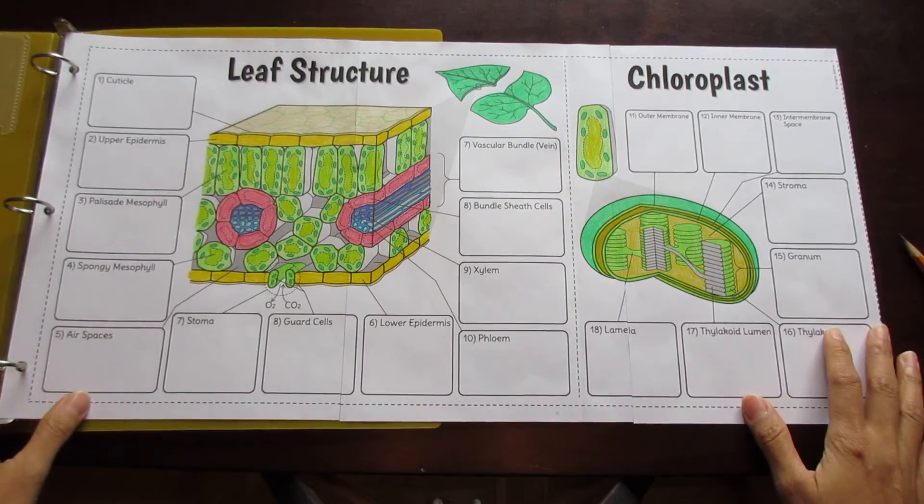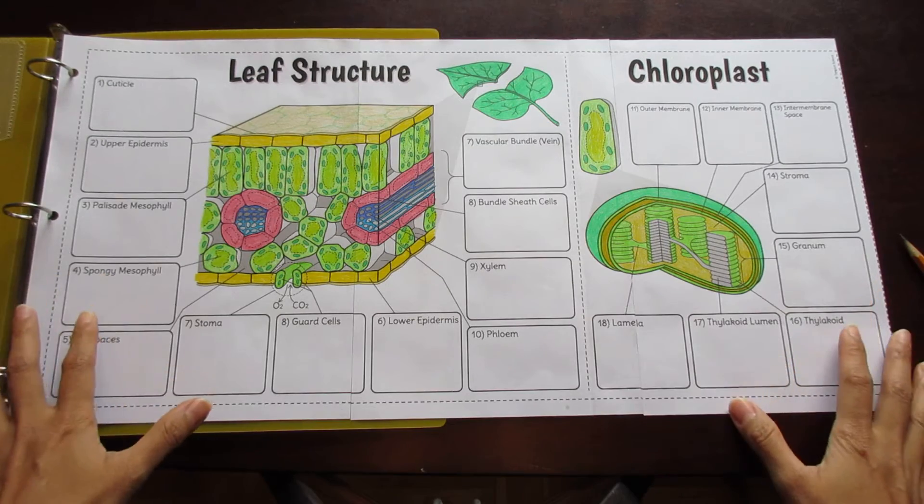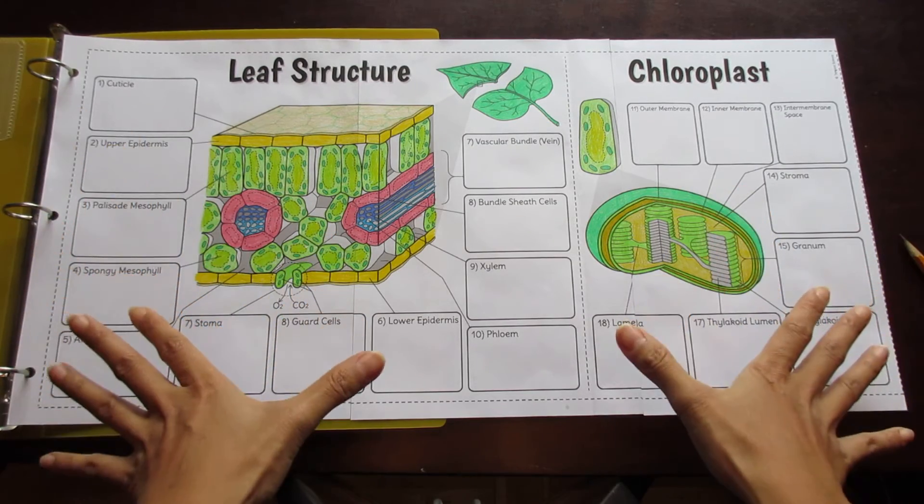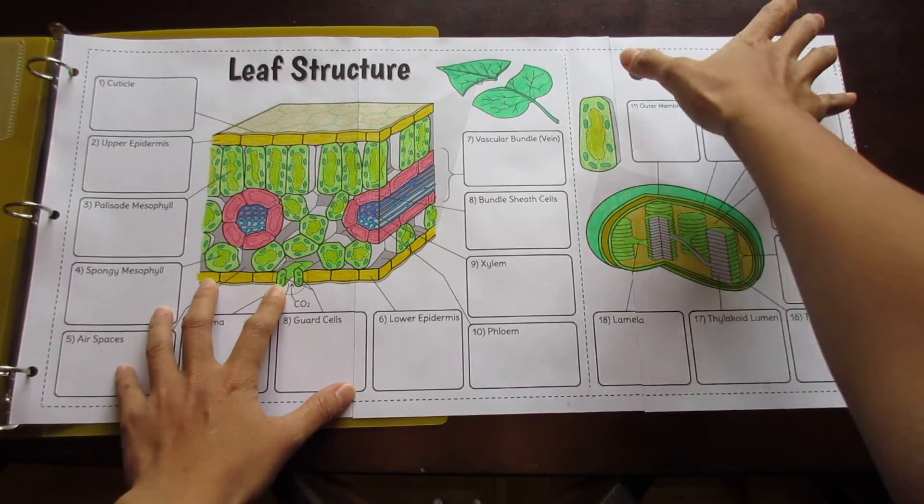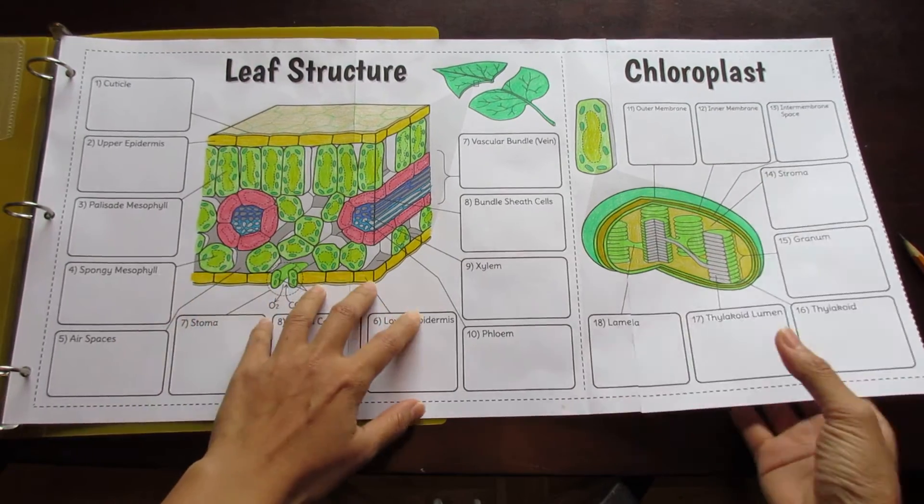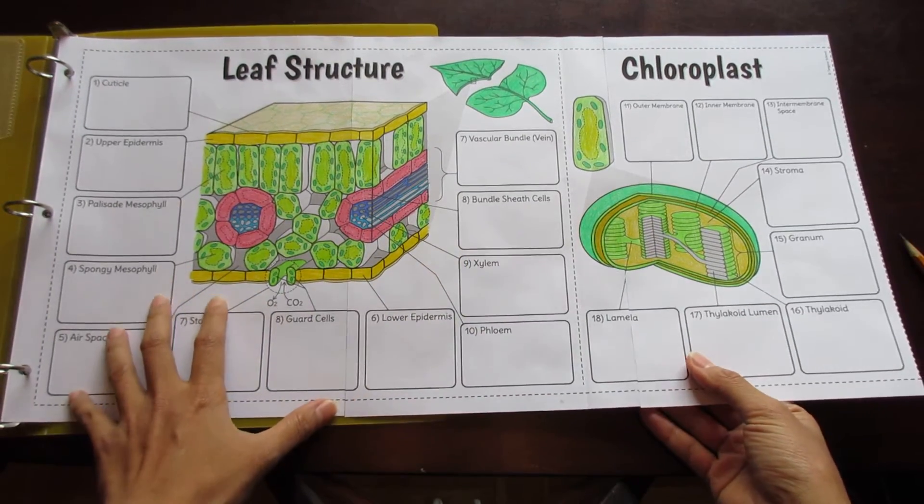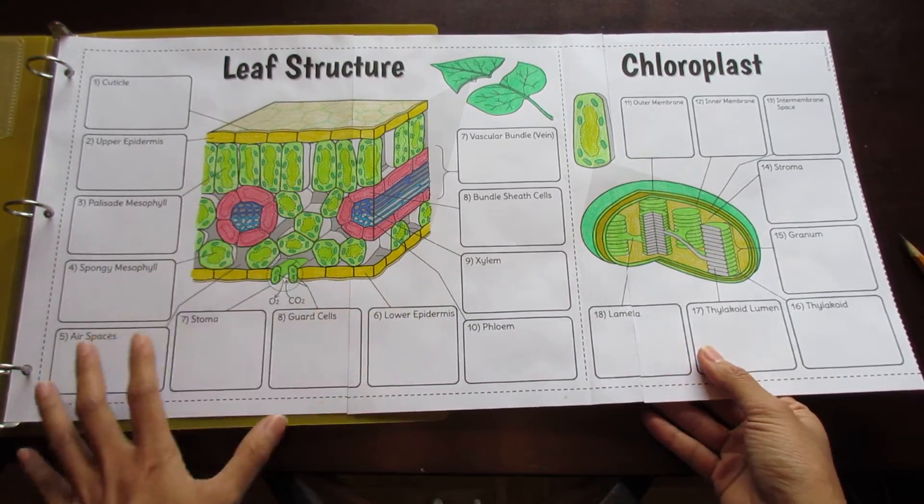Now I provide two options for this foldable, two major options. The first one contains three pages and includes the chloroplast. The second option includes only two pages and focuses on the leaf structure only.